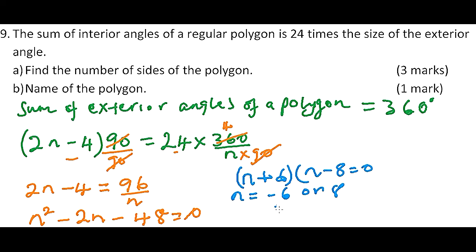So this means that n equals to minus 6 or 8. And since we are looking for the number of sides, the number of sides cannot be negative, so we ignore negative 6 and we say number of sides is equal to 8, 8 sides.